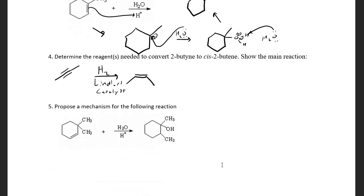For question five: propose a mechanism for the following reaction. Looking at the starting material, we have two methyl groups on one carbon and only one methyl on the adjacent carbon, but in the product that methyl group has moved — suggesting a 1,2-methyl shift occurred. We take the proton from the acid onto one of these carbons. Based on seeing the methyl migration, I'll put the hydrogen on that carbon so the plus charge is positioned for the 1,2-methyl shift.